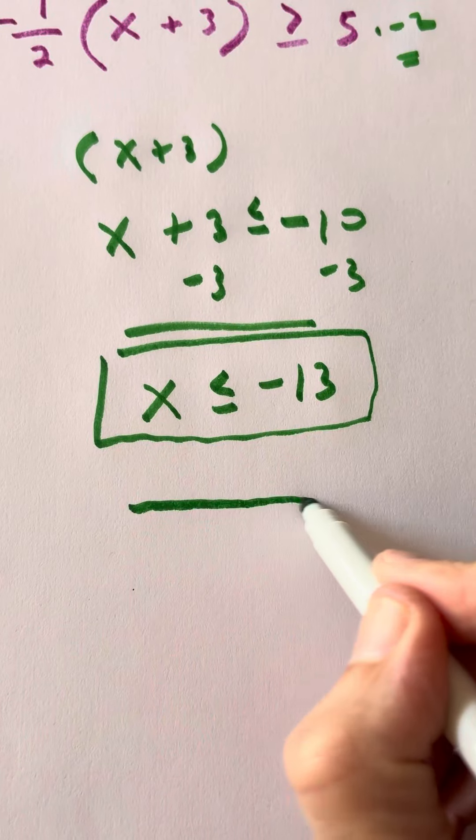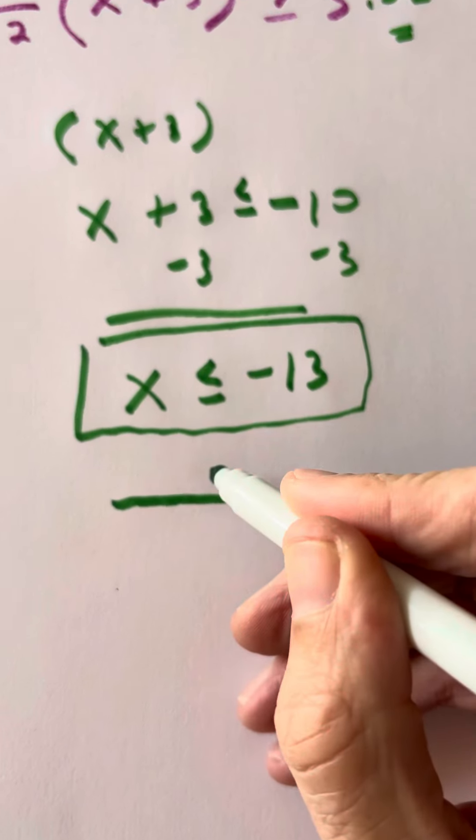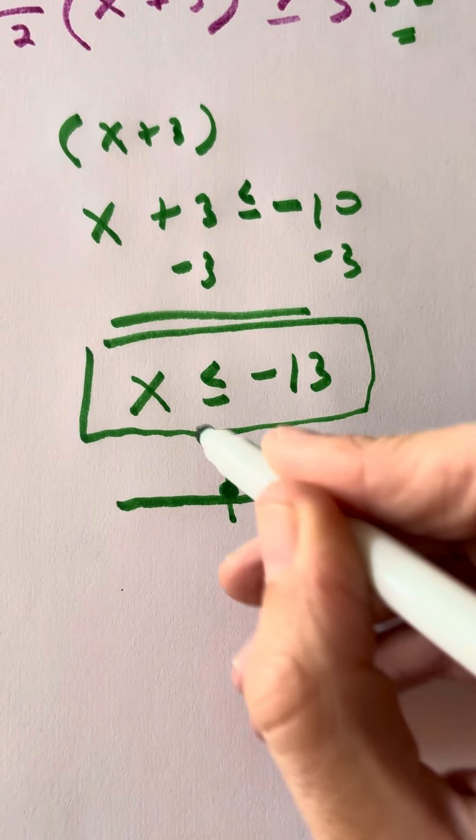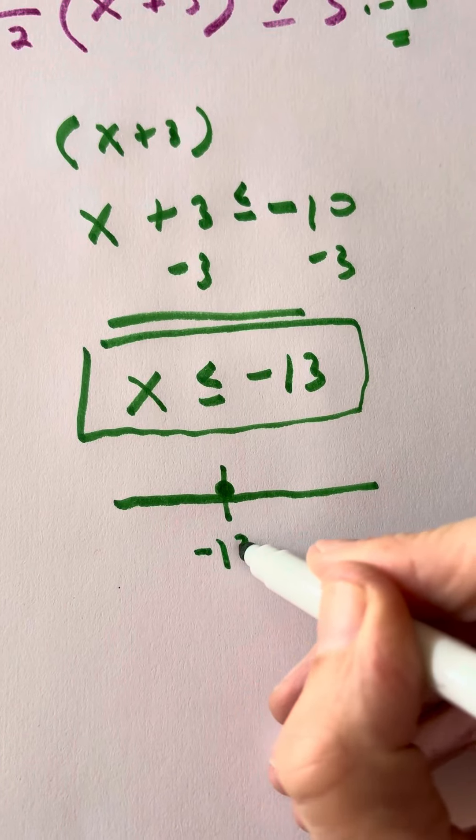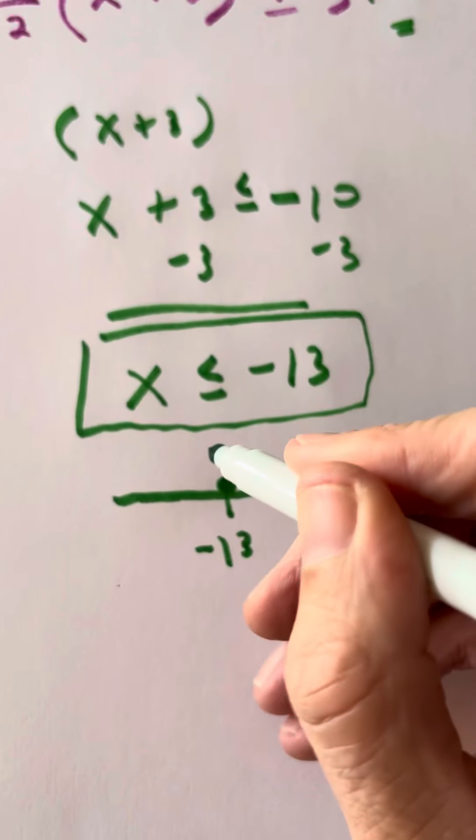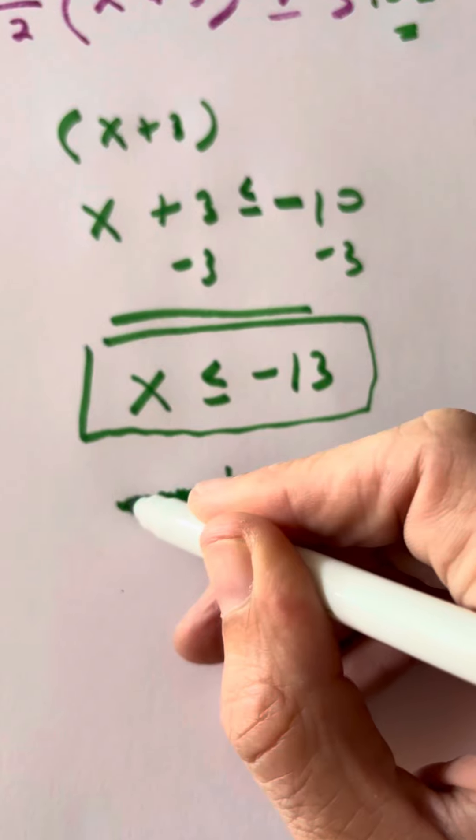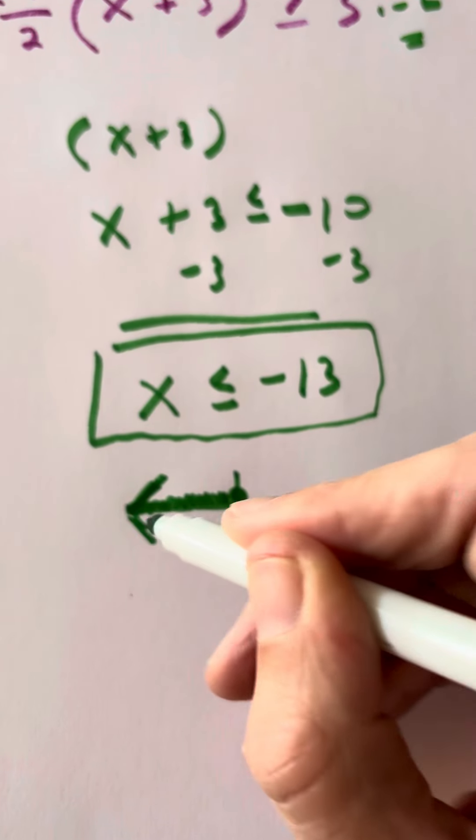Now if you do have to graph it, since there's a line under the symbol, you want a closed circle there, and we're going to the left of negative 13. So just mark negative 13. We're going to the left. So we're going to shade to the left, and then we're going to darken in that arrow.